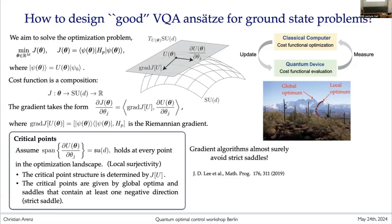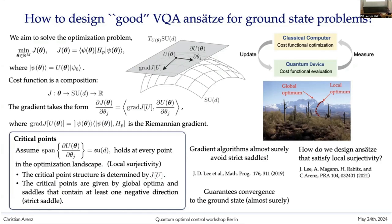Going back to work by Schirmer, you can show that the critical points are global optima and saddle points only, with the caveat that the saddle points are strict — meaning there exists one direction which is negative. It's important because in the classical machine learning literature, people have shown that you never hit these strict saddle points. So if you have enough parameters — at least d squared minus one — then if you pick a random initial point, you converge to the global minimum, which is given by the ground state. I haven't published this yet because I first need to argue whether it's actually possible to satisfy this condition.